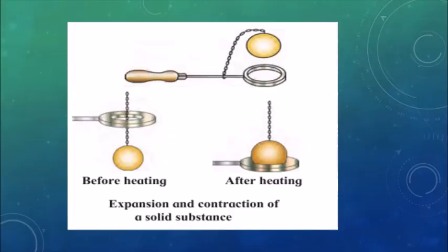Hello children, this is Part 2 of the chapter on Heat. In the first part we covered conduction, convection, radiation, and good and bad conductors of heat. Now let us see what will happen to substances when we heat them.